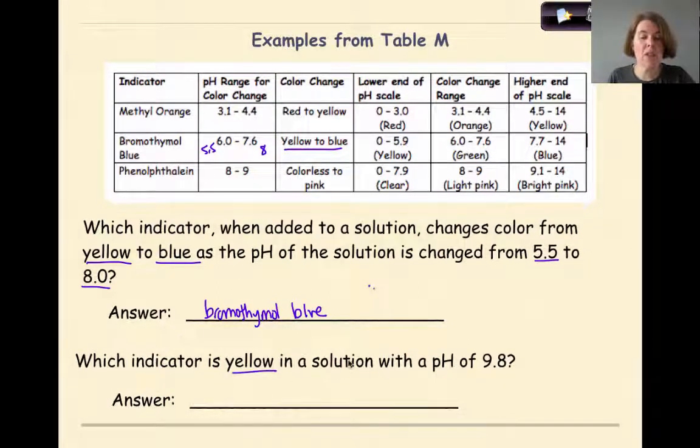Which indicator is yellow in a solution with a pH of 9.8? So we want to see a yellow color around the basic end. We have methyl orange, which is changing from red to yellow, so that's a possibility because that yellow is over towards the basic side. Bromothymol blue is not really an option because the yellow is more in the acidic range. And phenolphthalein is going from colorless to pink. So it looks like methyl orange might be our best option. So methyl orange is from 0 to 3, it's going to be red. And from 4.4 to 14, it's going to be yellow. So methyl orange is our answer for this one.